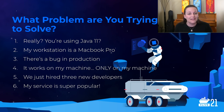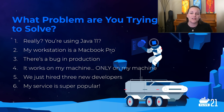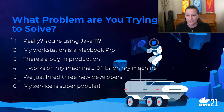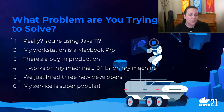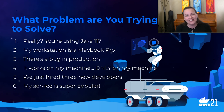Number three: there is a bug in production. The first step as a developer is to reproduce the problem. But that's very difficult to do if you're already developing the latest and greatest and you've made changes to your environment that are not backward compatible. Consistency and build reproducibility are key when you're chasing bugs. Number four: it works on my machine, only on my machine. This is related to number two. Consistency in software versions and libraries will make your life a lot less complicated.